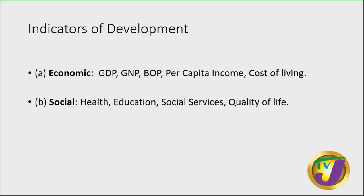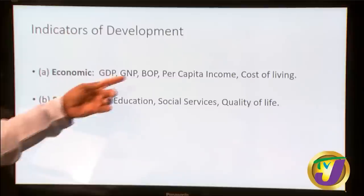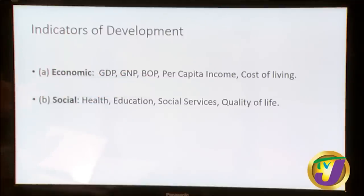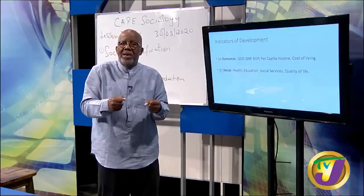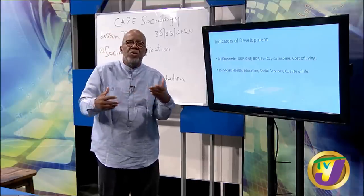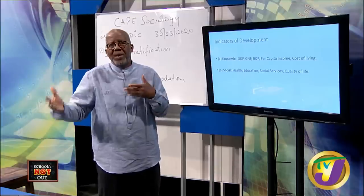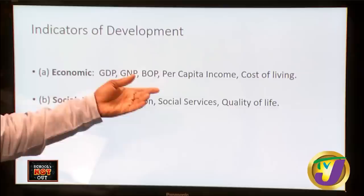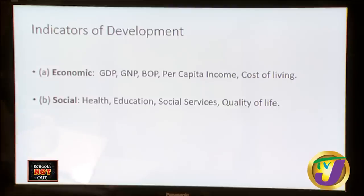Indicators of development: you must know what GDP is — the amount of goods and services produced in our country within a given period, generally a year. Gross national product is the amount of goods and services produced by the people of that country within a given period. Balance of payments has to do with foreign exchange — whether we import or export. Per capita income is generally the overall GDP divided by the population. Social indicators include health — generally infant mortality — education, level of literacy, and social services. During COVID-19, social services like food stamps and food delivery affect quality of life.